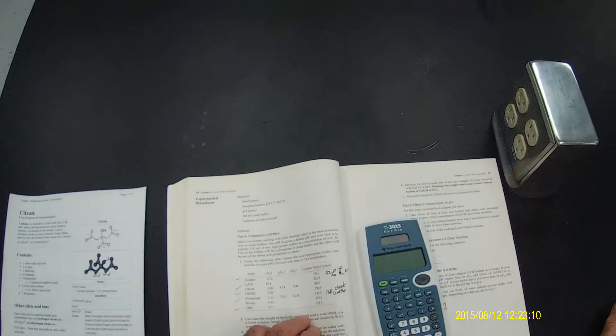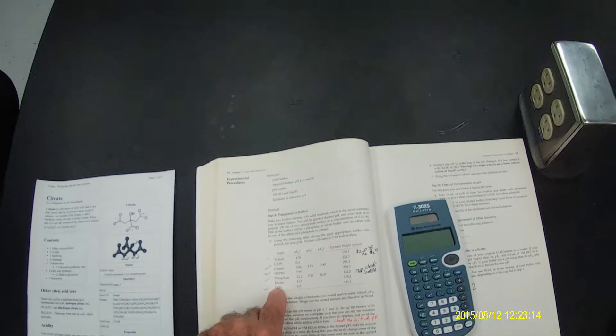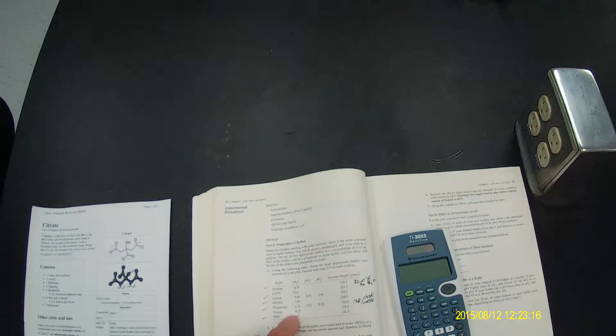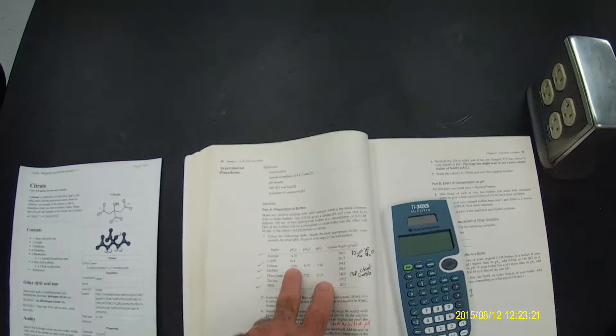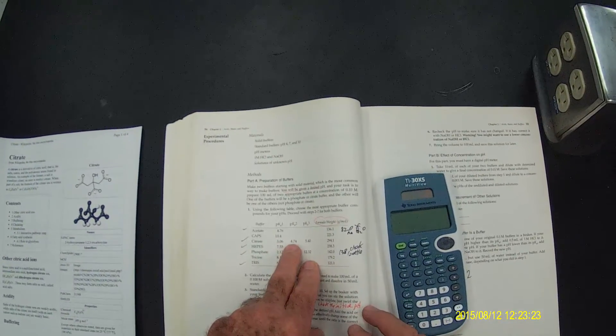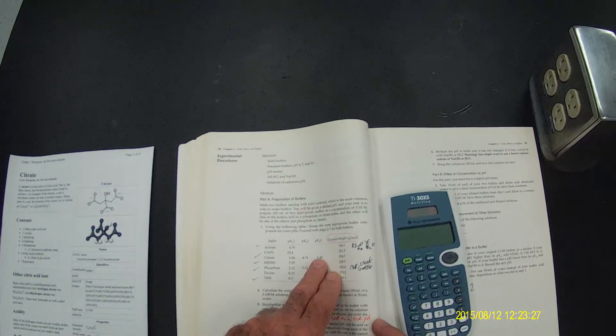We're going to prepare 100 milliliters of a 0.1 molar buffer, and I'd like to illustrate how to do this in the lab. Let's take citrate as an example. Citrate has three pKa's: 3.06, 4.74, and 5.40, so we could buffer at any of those three pH's.